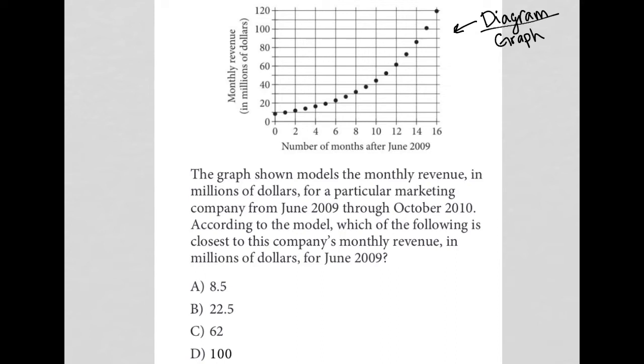We see our graph that has an x-axis labeled 'number of months after June 2009' and a y-axis showing monthly revenue in millions of dollars. As the number of months after June increases - July, August, September, three months, five months, ten months, twelve months away from June 2009 - our graph is increasing exponentially.